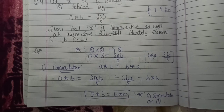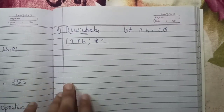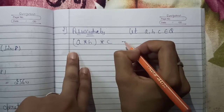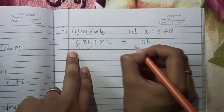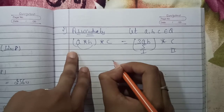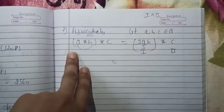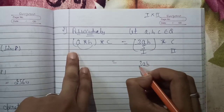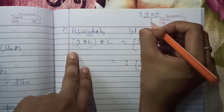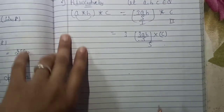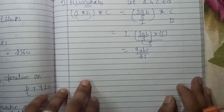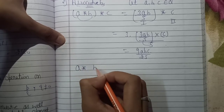To prove associative: take (a star b) star c. First compute a star b equals 3ab over 5. Then apply star with c: (3ab over 5) star c equals 3 times (3ab/5) times c over 5, which gives 9abc over 25. Now for the right hand side: a star (b star c). Compute b star c equals 3bc over 5, then a star (3bc/5) equals 3a times (3bc/5) over 5, giving 9abc over 25.